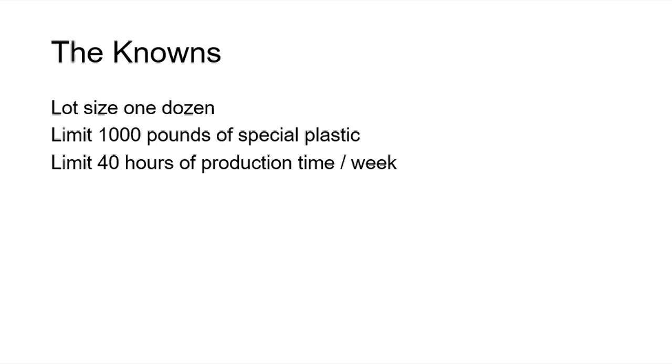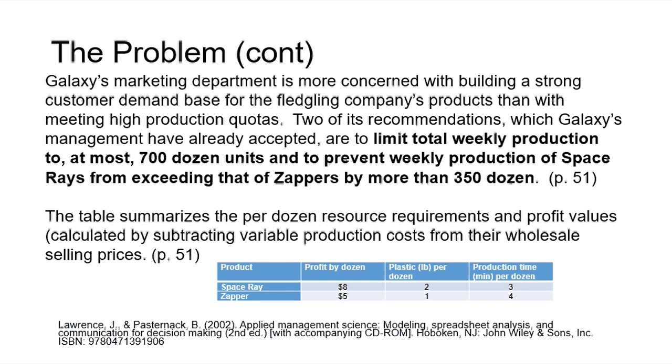Going back to the last two paragraphs of the problem, we see there's a little bit more about the company, but then we get down to where there's information we can use. They've already agreed to limit total weekly production to, at most, 700 dozen units, and they don't want weekly production of the Space Rays to exceed that of the Zappers by more than 350 dozen.